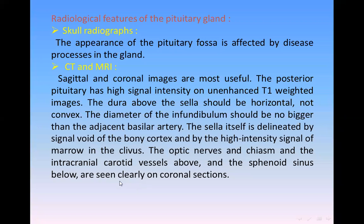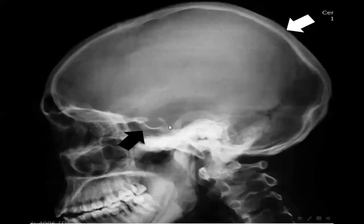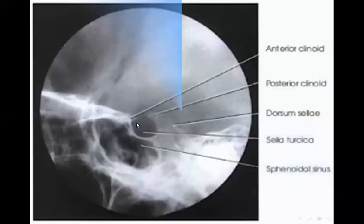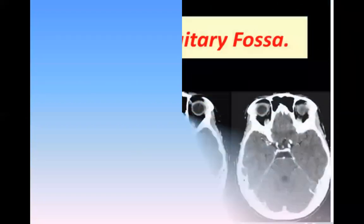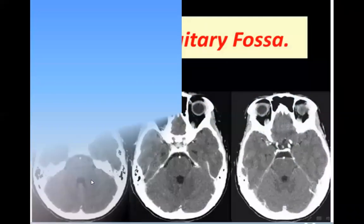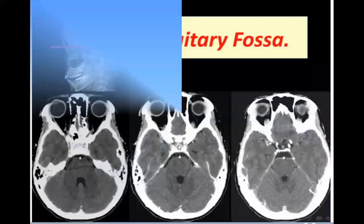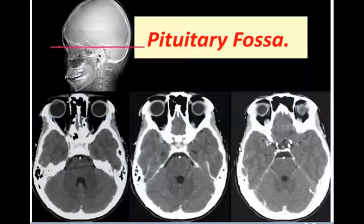As we see here, this is the sella. This is the anterior clinoid. This is the dorsum sellae, this is the sella, and this is the sphenoid sinus. This is the axial section of CT scan showing the pituitary gland. This is the pituitary stalk or infundibulum.